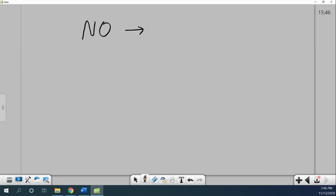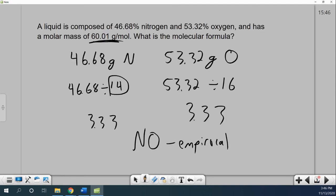So what do I do with this empirical formula? Well, I need its molar mass. One nitrogen plus one oxygen. So it has an empirical molar mass of 30 grams per mole. One unit is 30 grams per mole. And my whole thing is supposed to be 60.